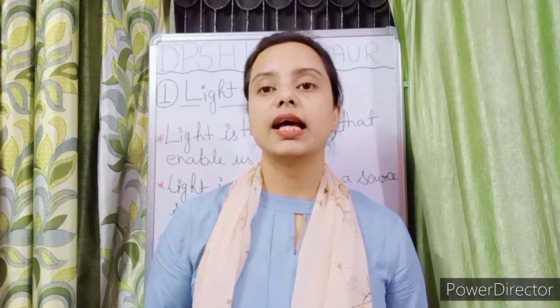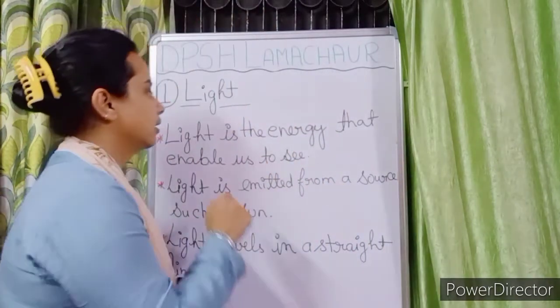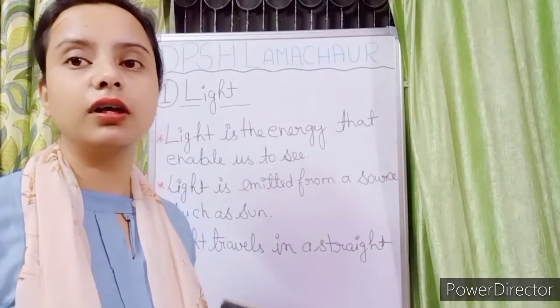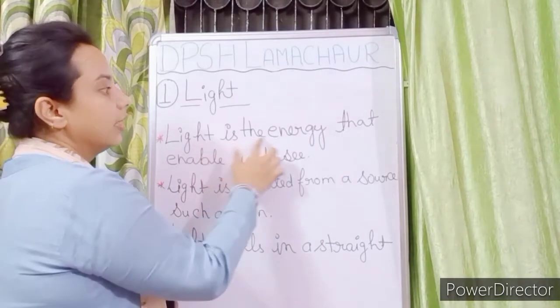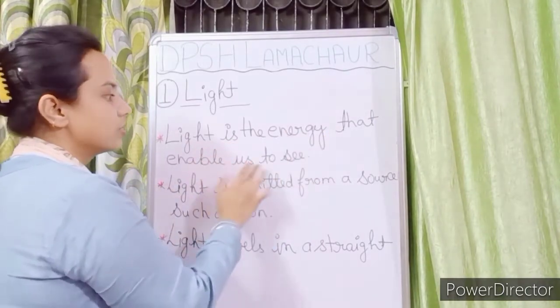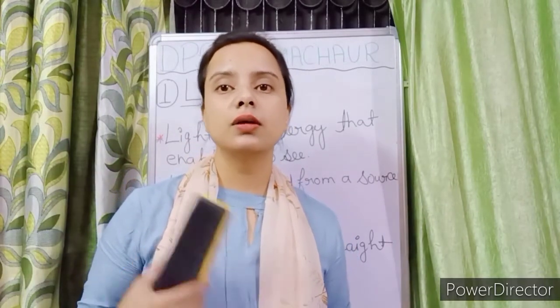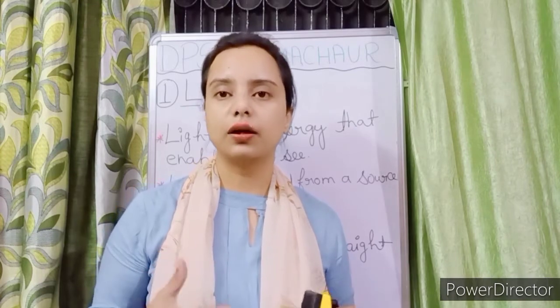The very first topic of chapter number 11 is Light. What is light and what are the characteristics of light? Light is the energy that enables us to see — it is that energy that makes us see any object or the surroundings.